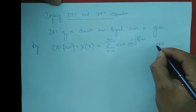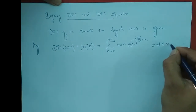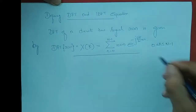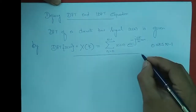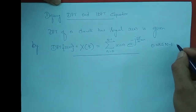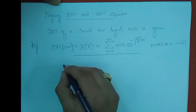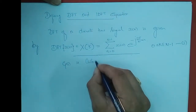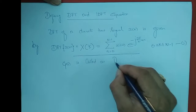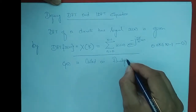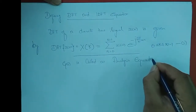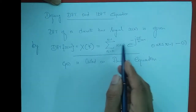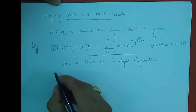Here k is varying from 0 to N minus 1. This equation is called the analysis equation — we'll call it equation 1. Now let me talk about a few parameters in this equation.